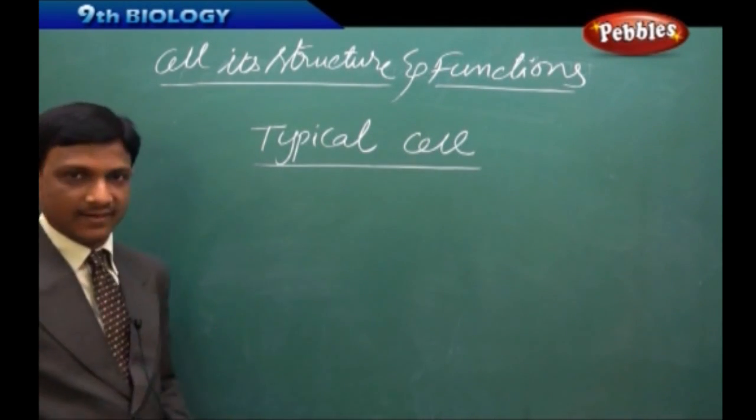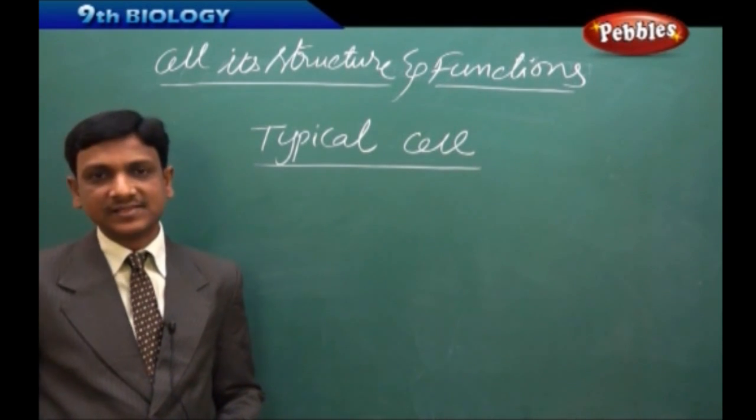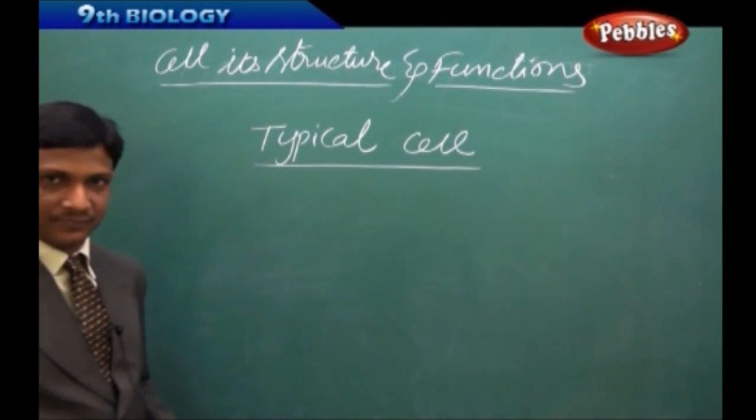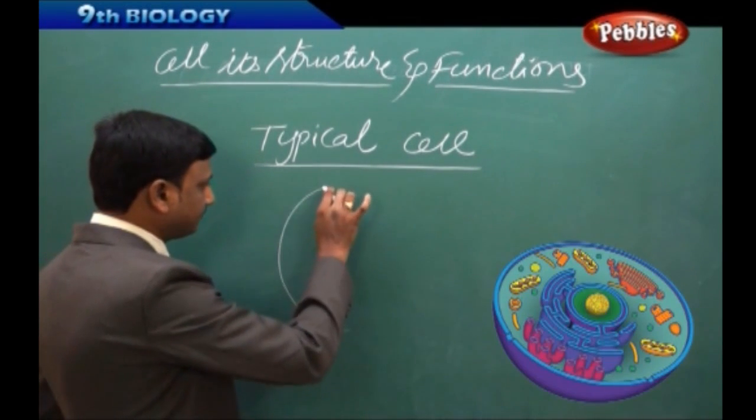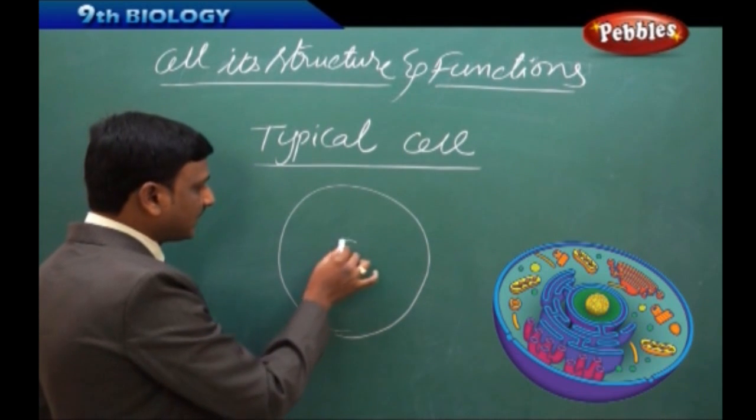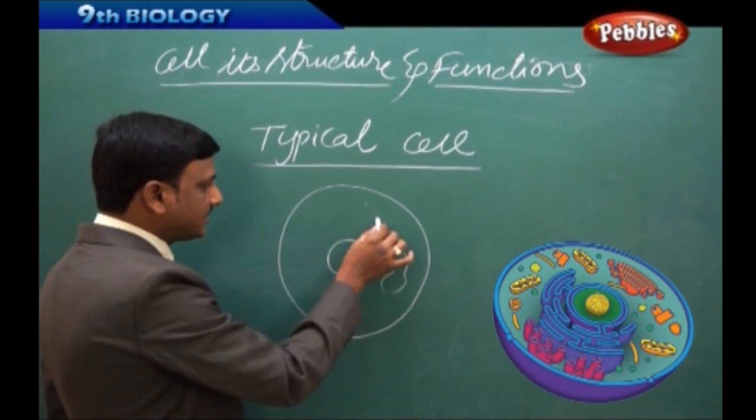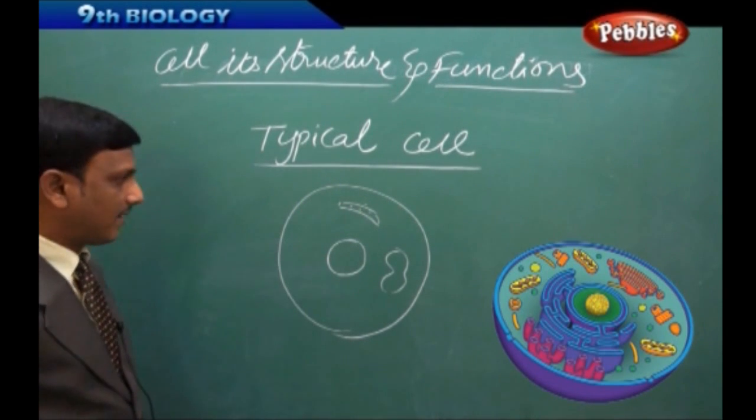Now, typical cell, what is a typical cell? We know plant cells and we know animal cells. Now what is this typical cell? So typical cell is nothing but a model cell which represents all the cell organelles present in the cell.